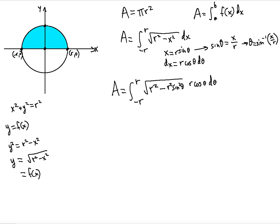So we write negative pi over two as the lower limit. When we substitute the upper limit r, we get arc sine of one, which is precisely pi over two. Now, to find the area of the entire circle — not just the upper half — we use symmetry: the upper and lower halves have equal area. So we multiply the integral by two to get the full area of the circle.